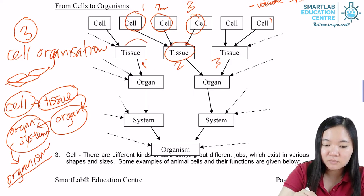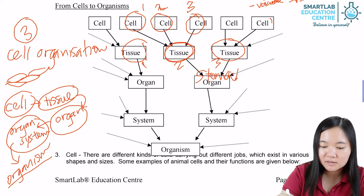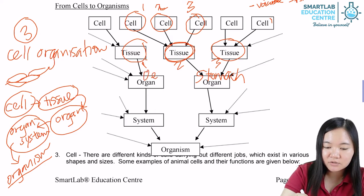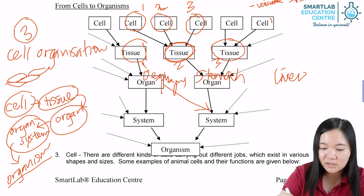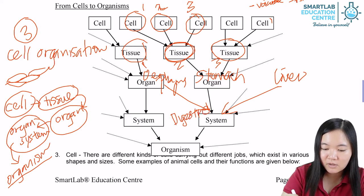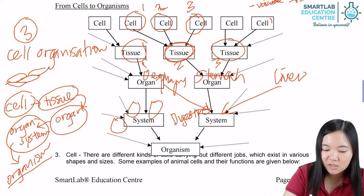For example, the outermost layer, the middle layer, and the innermost layer are the three tissues of the stomach. The stomach is an organ. Together with other organs such as the esophagus, liver, large intestine, and small intestine, they all make up the digestive system. Other systems such as the nervous system, reproductive system, and circulatory system all together make up the organism.